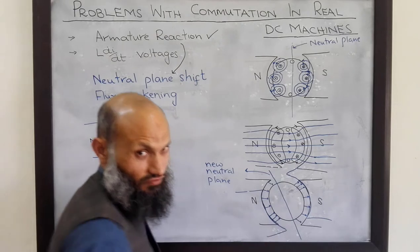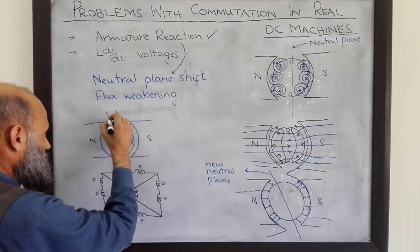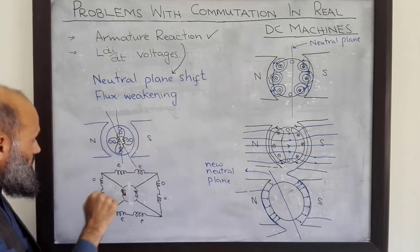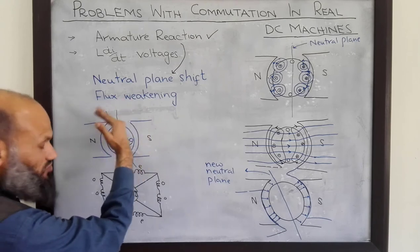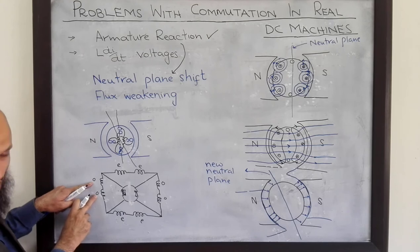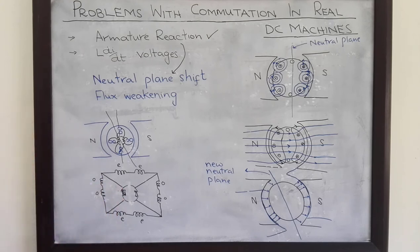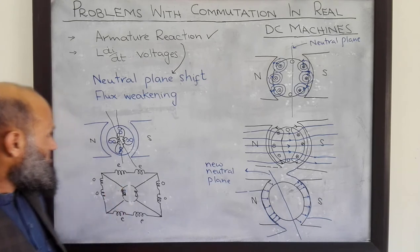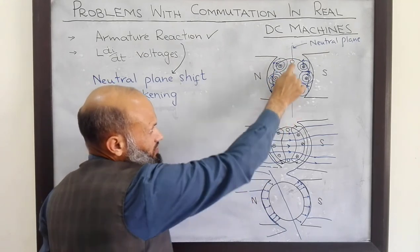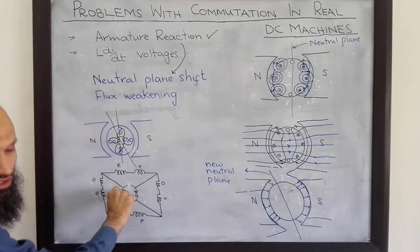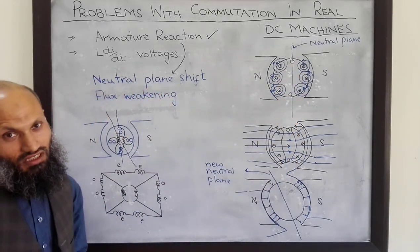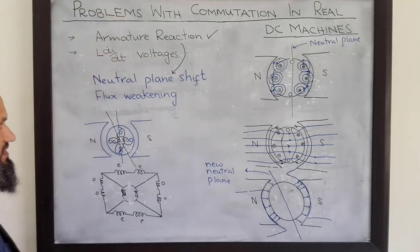However, when the neutral plane shifts due to this effect, the situation changes. The new neutral plane is here, and now this conductor is under the influence of this pole. Likewise, this conductor is under the influence of this other pole because the neutral plane has shifted. This is now the plane at which flux density is zero, and hence some voltage will be induced in this coil. Now, two ends of the voltage source being shorted will result in a problem. So this is the first problem of neutral plane shift due to armature reaction.